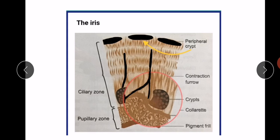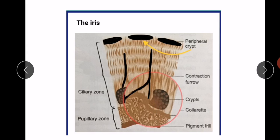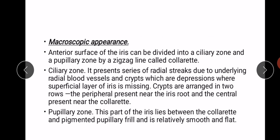The pupillary zone is the part of the iris that lies between the collarette and the pigmented pupillary frill. It is relatively smooth and flat as compared to the ciliary zone.